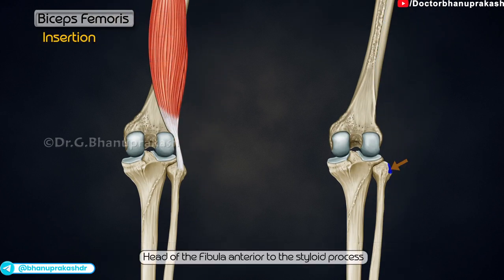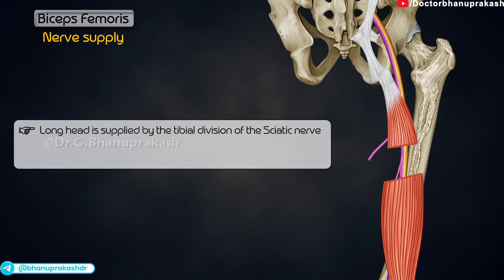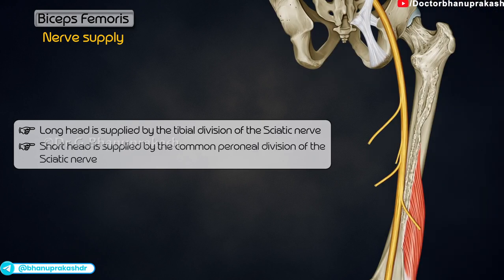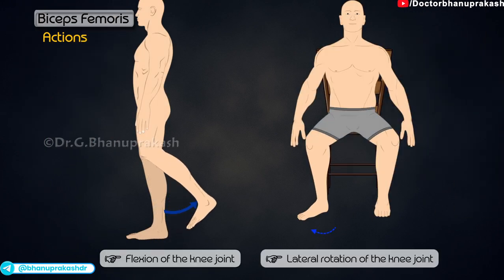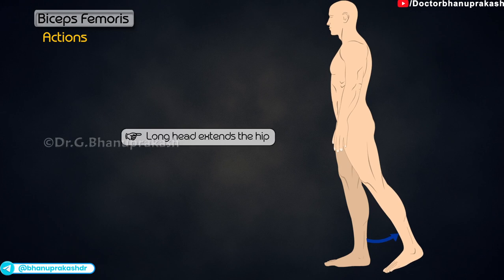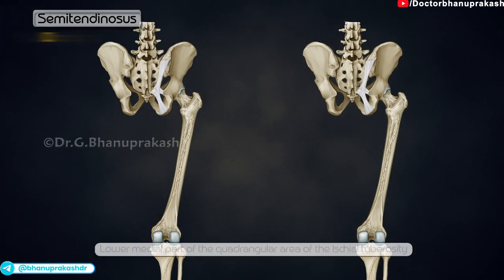The biceps femoris inserts onto the head of the fibula, anterior to the styloid process. The long head is supplied by the tibial division of the sciatic nerve; the short head is supplied by the common peroneal division of the sciatic nerve. Actions include flexion and lateral rotation of the knee joint; the long head also extends the hip.